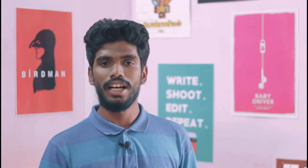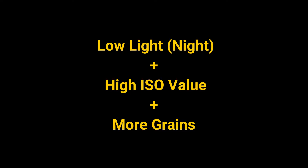Easy to remember, easy to recall: bright light — low ISO value — no grains. And low light — high ISO value — more grains.